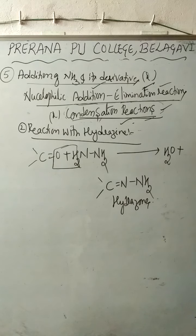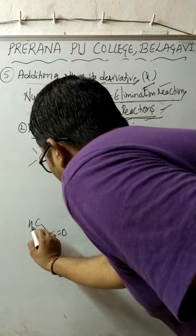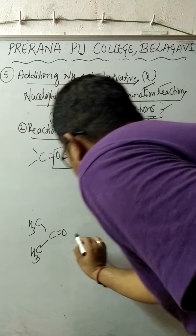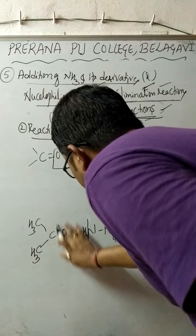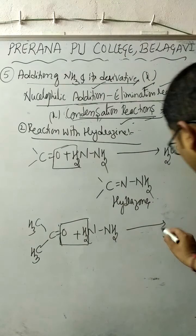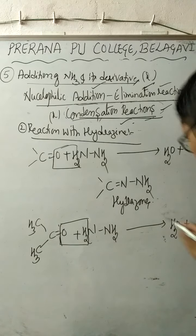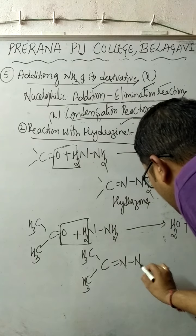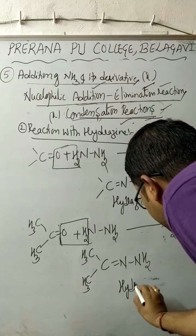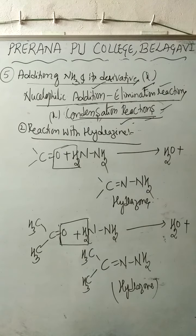Hydrazine can react with either an aldehyde or a ketone in the same way. For example, when acetone is made to react with hydrazine, water is eliminated, giving the product CH3-C(=N-NH2)-CH3. This product is called a hydrazone. So when hydrazine reacts with an aldehyde or a ketone, hydrazones are the major product obtained.